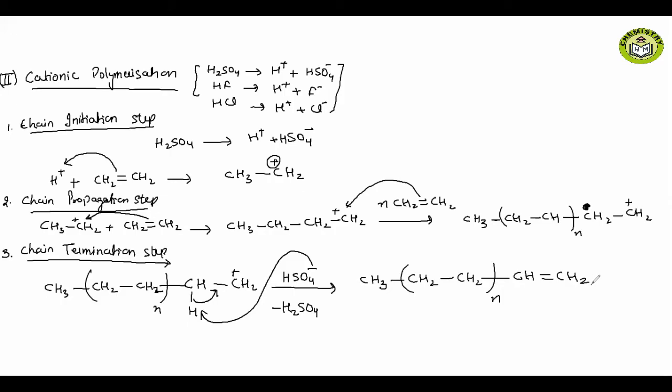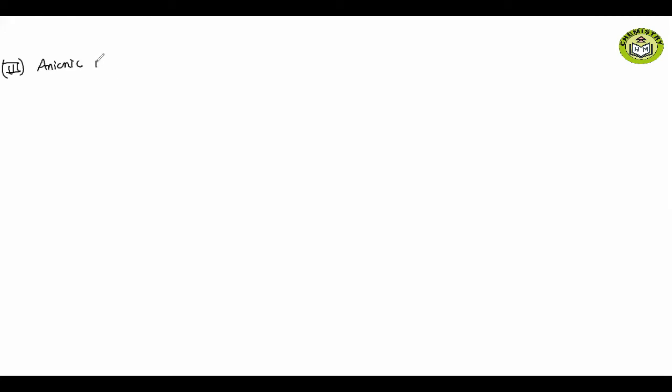This is the mechanism of cationic polymerization. Moving on to point number three, the third type of mechanism - after free radical and cationic - is anionic polymerization.